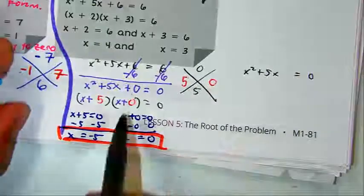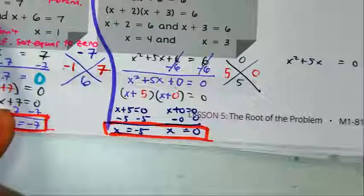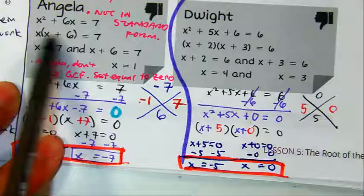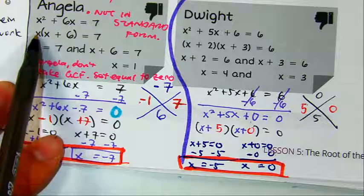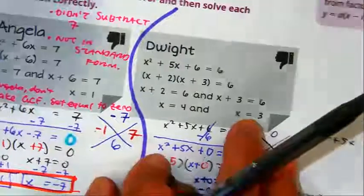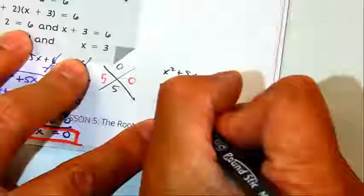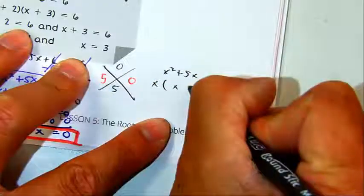And then Angela actually did something over here that I can actually use. What did she do over here? She did the greatest common factor. Look at this. X times X plus 5 equals 0.